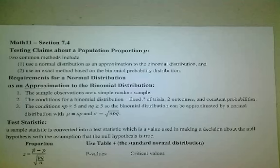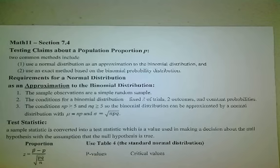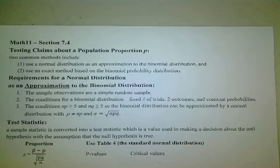This chapter becomes like a broken record because we just end up doing the same steps over and over again. We're just changing the parameter involved. We did mean - if we knew sigma we'd look for Z scores, if we don't know sigma we'd look for T scores. Now we're going to do proportion, and later we will do variance or standard deviation. There are just some small changes depending on what parameter we're looking at.